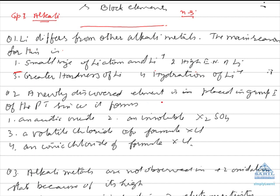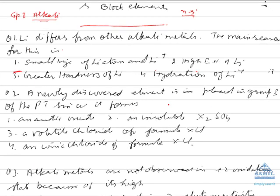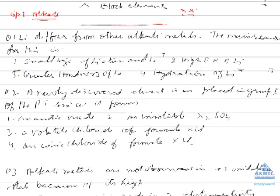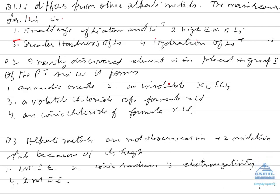Question 2: A newly discovered element is placed in Group 1 of the periodic table. Group 1 elements have only one valence electron, so they readily lose this electron and tend to form ionic compounds, which are solid at room temperature. Their hydroxides will be basic in nature and they will show a +1 oxidation state.